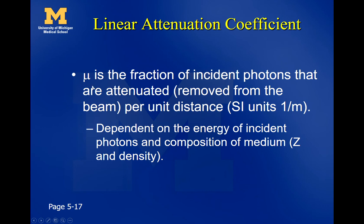μ is the linear attenuation coefficient — the fraction of incident photons removed from the beam per unit distance. In SI units that's per meter. It is dependent upon both the energy of the incident photons and the composition of the medium. So when you use μ, you must know both the x-ray energy and what material the x-ray is passing through.